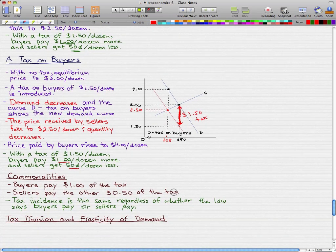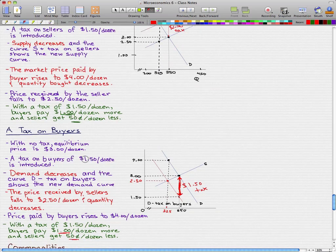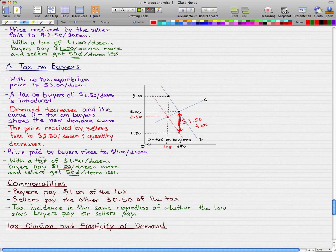Let's end with the commonalities. The buyers pay $1 more of the tax, and the sellers pay the other $0.50 of the tax, since the total tax was $1.50. That was the case in both cases. Sellers get $0.50 less, buyers pay $1 more.